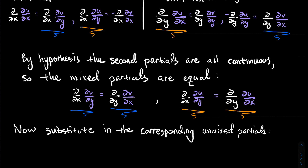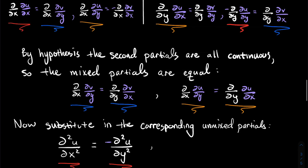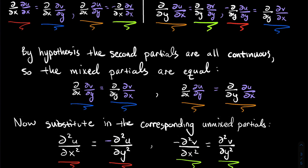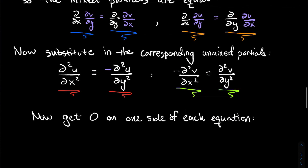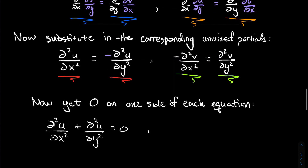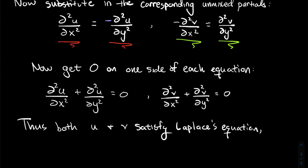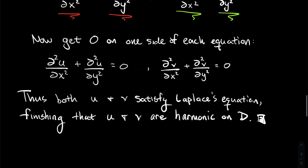Now we substitute in the corresponding unmixed partials. If the blues are the same, then the reds have to be the same: the second partial of U with x equals minus the second partial of U with y. And if the oranges are the same, the greens have to be the same: the second partial of V with x equals the second partial of V with y. Getting zero on one side of both equations, we get: the second partial of U with x plus the second partial of U with y equals zero, and same for V. That says U and V each satisfy Laplace's equation, which finishes the proof that U and V are harmonic on D.